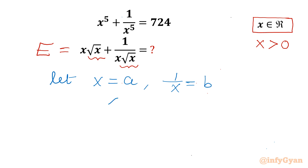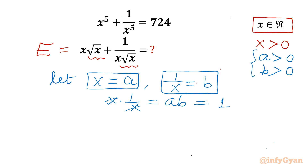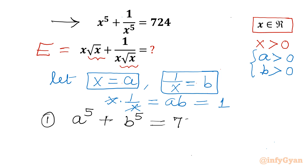Let us consider √x = a and 1/√x = b. The product x × (1/x) = ab, which cancels out to give ab = 1. Since x > 0, both a and b will be positive for real solutions. Now I will write our equation in terms of a and b: a⁵ + b⁵ = 724, and the second equation is ab = 1.